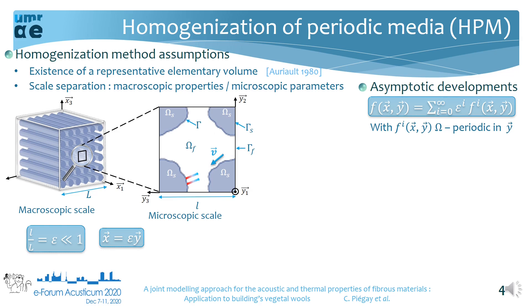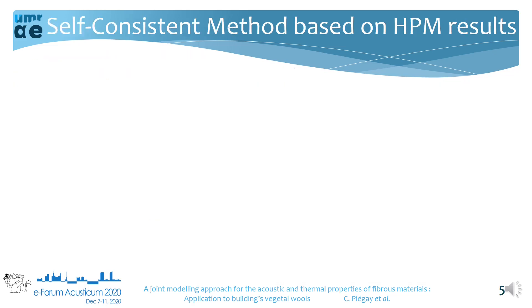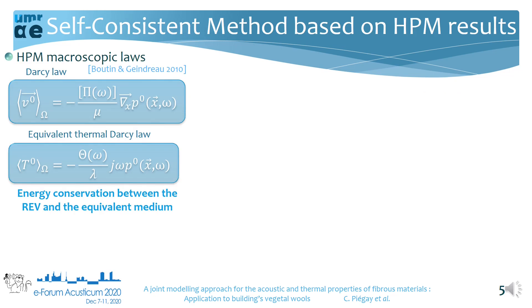After identification of terms of the same power in epsilon, we obtain key equations. The first means that pressure in the pores varies at the microscopic scale; the second that the fluid can be considered locally incompressible; the third and fourth correspond respectively to the Navier-Stokes equation and the heat equation. The final step of HPM, based on both variational formulation and energy conservation, leads to macroscopic laws. However, HPM is used regardless of the periodic elementary volume morphology, and numerical computations are typically used. But our aim is to determine analytical solutions, and to do this a self-consistent approach can be used, relying on the HPM microscopic laws.